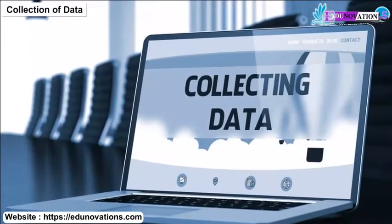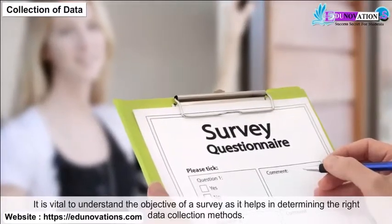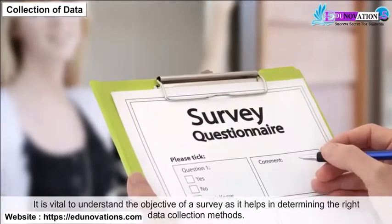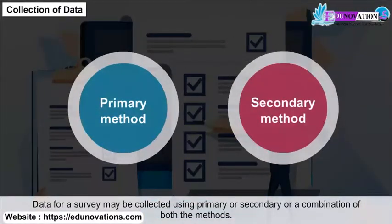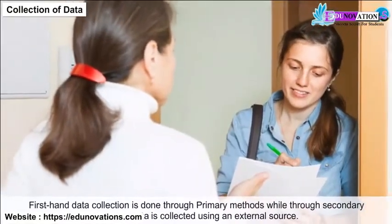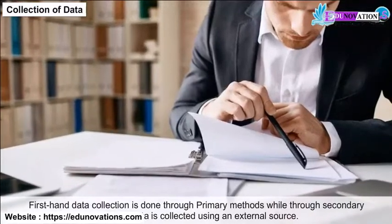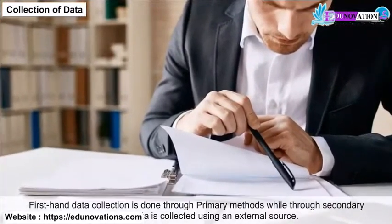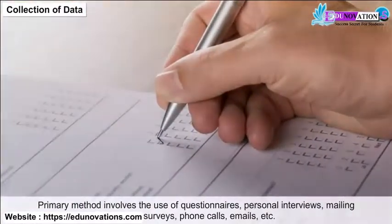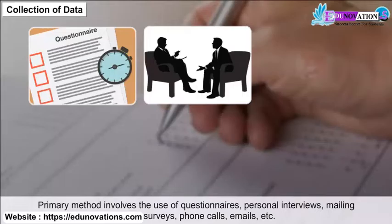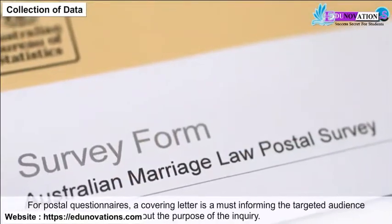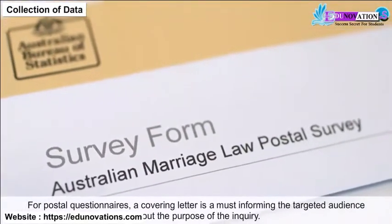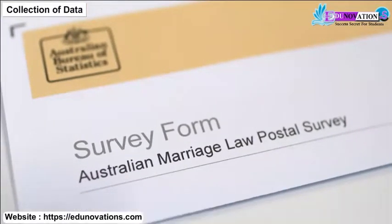Collection of data: It is vital to understand the objective of a survey as it helps in determining the right data collection method. Data for a survey may be collected using primary or secondary methods, or a combination of both. First-hand data collection is done through primary methods, while secondary methods use an external source. Primary methods involve the use of questionnaires, personal interviews, mailing postal surveys, phone calls, emails, etc. For postal questionnaires, a covering letter is a must, informing the targeted audience about the purpose of the inquiry.